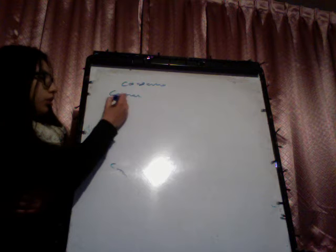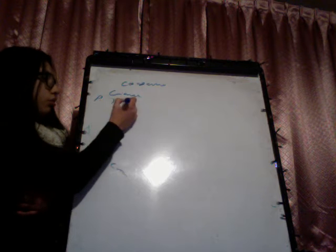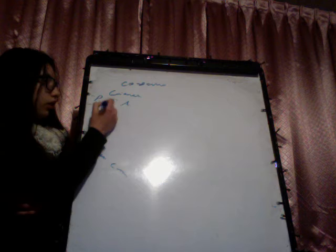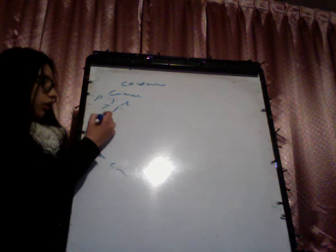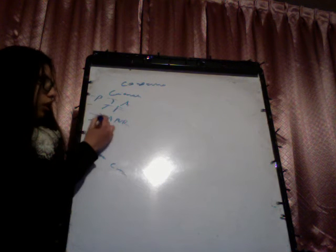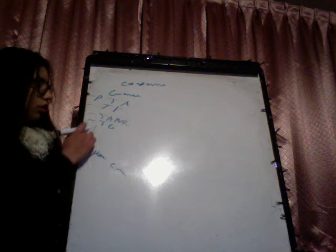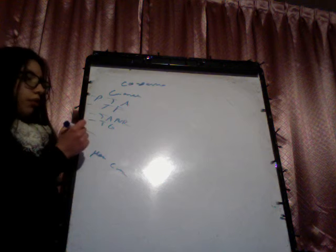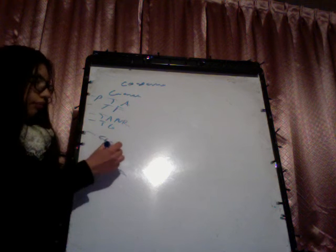In cyanotic defects, we have: persistent truncus arteriosus, tetralogy of Fallot, total anomalous pulmonary vein return, transposition of great vessels, tricuspid atresia, and Ebstein anomaly.